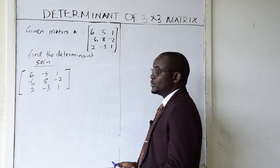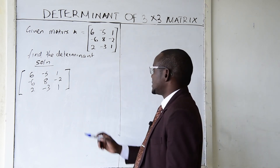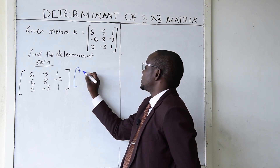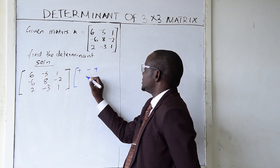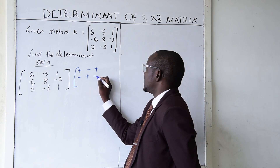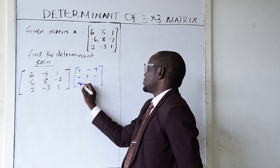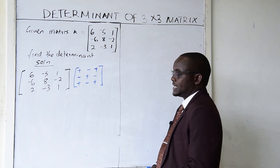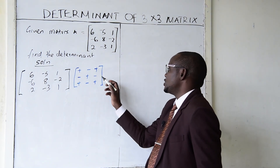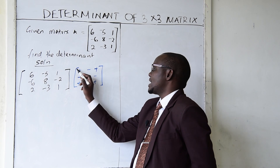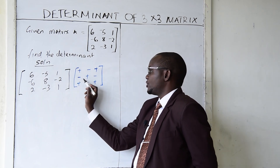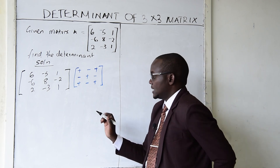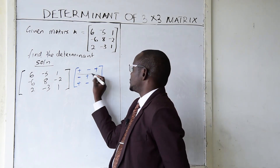We put the identity sign matrix: plus, minus, plus / minus, plus, minus / plus, minus, plus. As before, you can pick any row — row 1, row 2, or row 3. Let's use row 1.